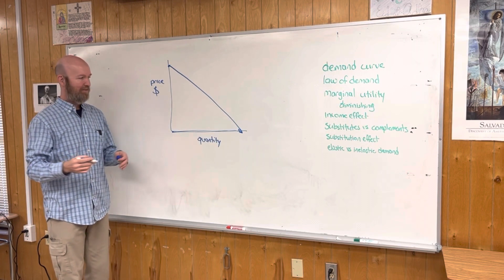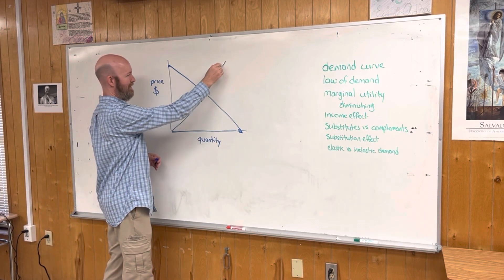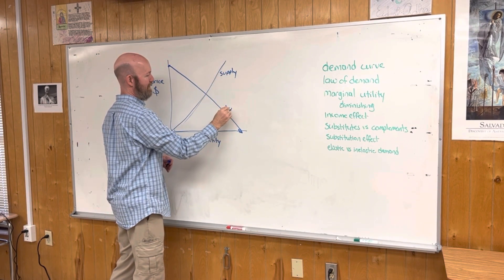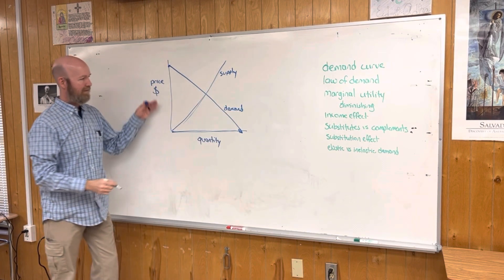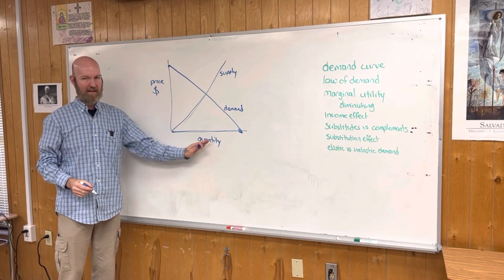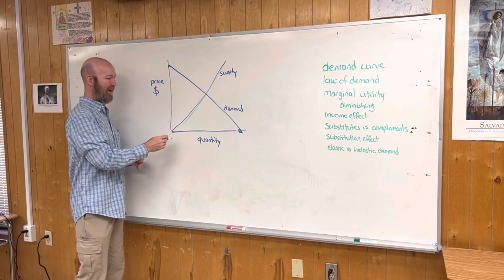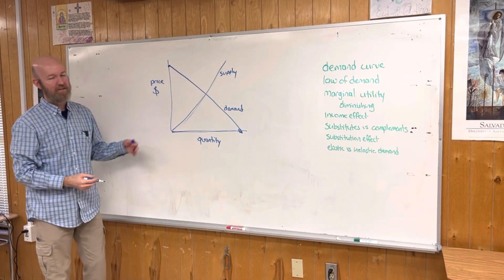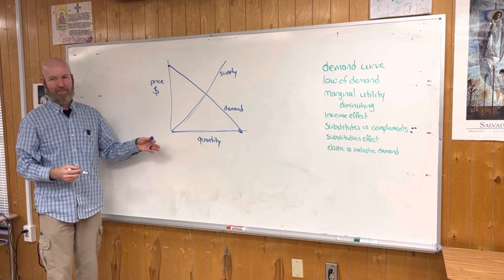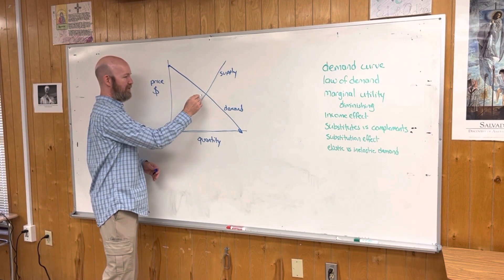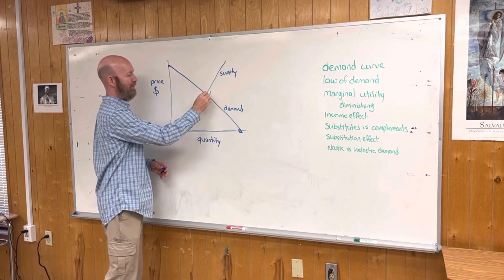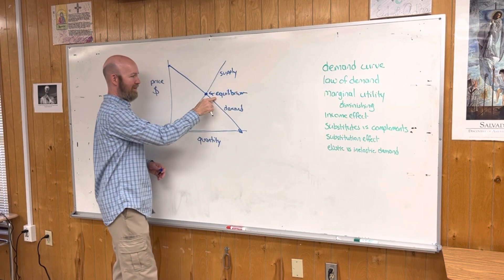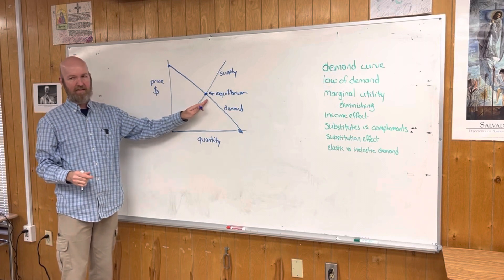Now, this is opposite of a supply curve, which goes the other way. So this would be supply, and this would be demand. As price goes down, demand goes up. But when it comes to supply, as the price goes up, supply will tend to go up — manufacturers want to produce more of something they can sell for a lot of money. Generally, the amount produced is going to be right here at equilibrium.